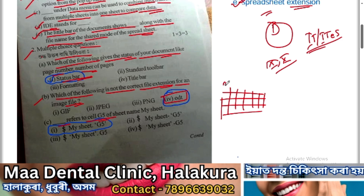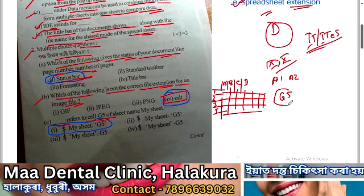This is a cell range. If you want to write a range from A1 to A2, then you will write it as A1:A2 — referring to a 5G-style notation in the spreadsheet.